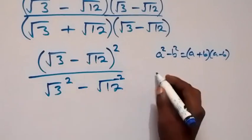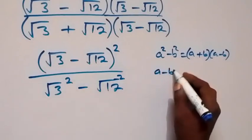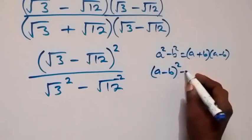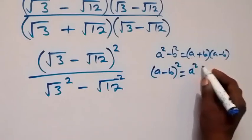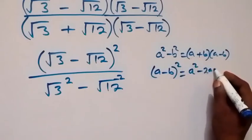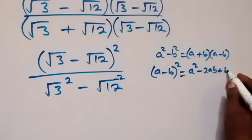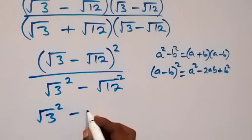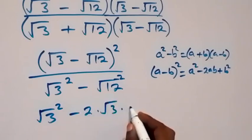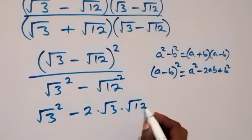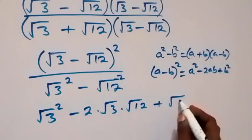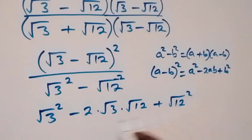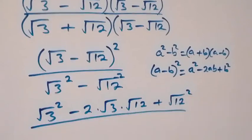When we have a minus b squared, this is the same thing as a squared minus 2ab plus b squared. So this will give us root 3 squared minus 2 times root 3 times root 12 plus root 12 squared.